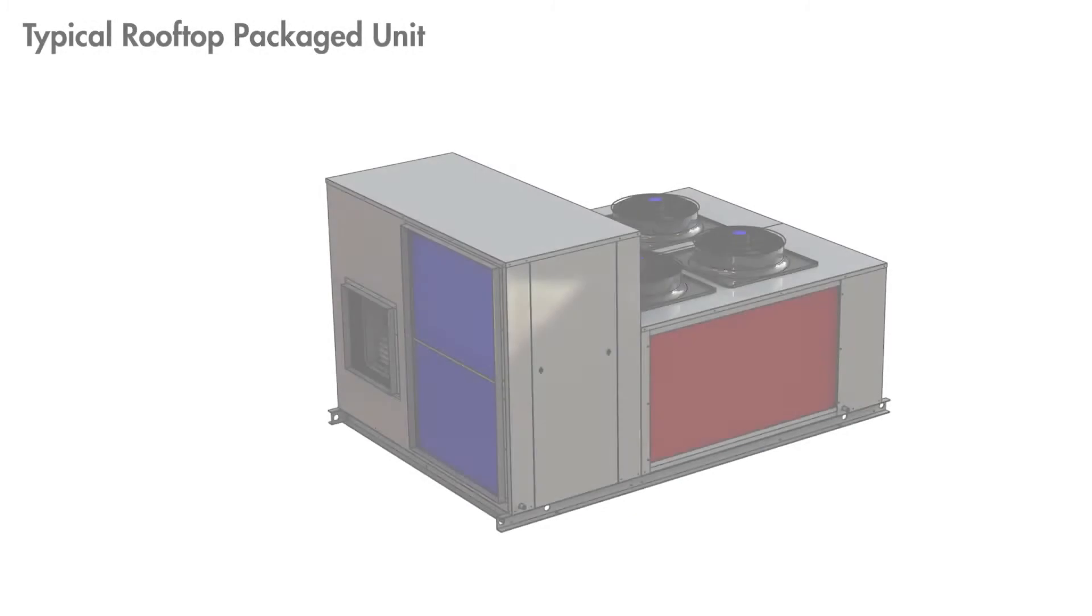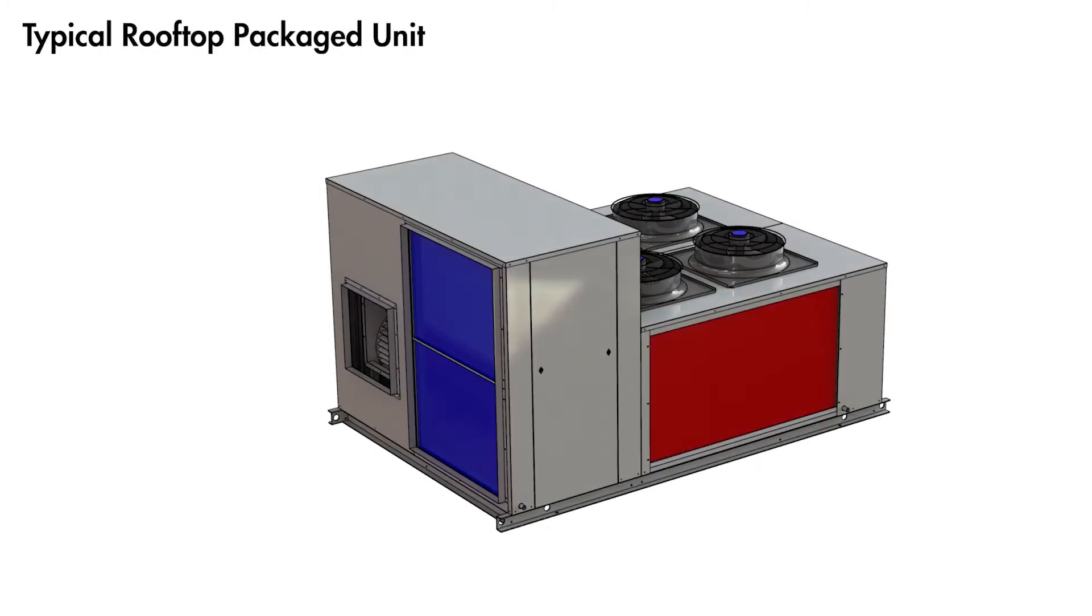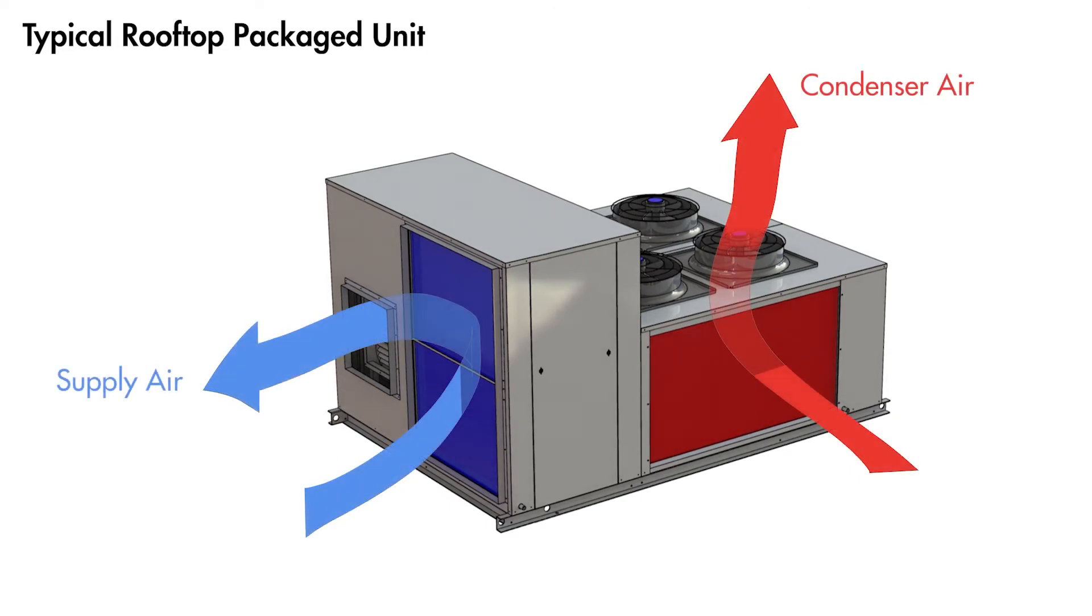To start with let's look at a conventional DX system that can be found in a typical air conditioning unit. These use an evaporator coil and a condenser coil to transfer heat from one place to another and provide useful heating or cooling to an indoor space.